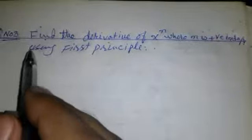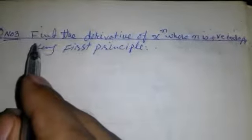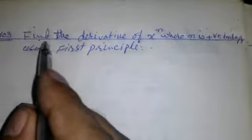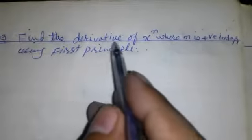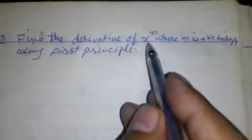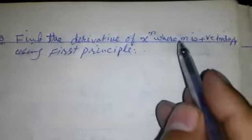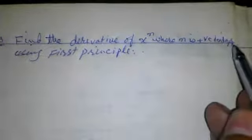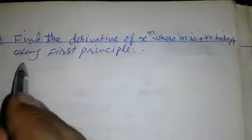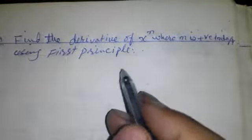Bismillahirrahmanirrahim. Today we are going to solve a question from derivation: find the derivative of x to the power n, where n is a positive integer, using the first principle. Let's solve this.